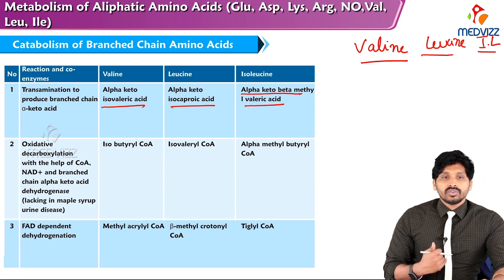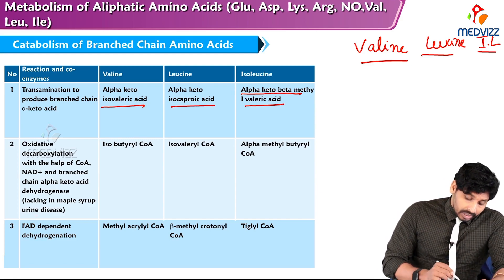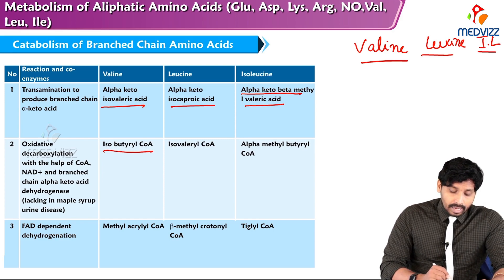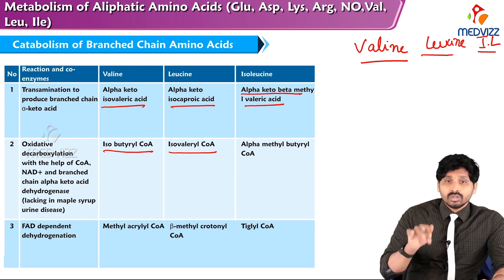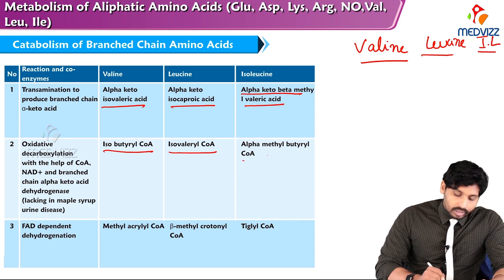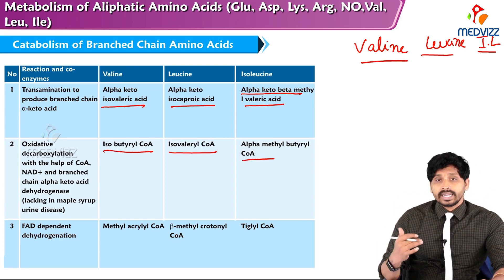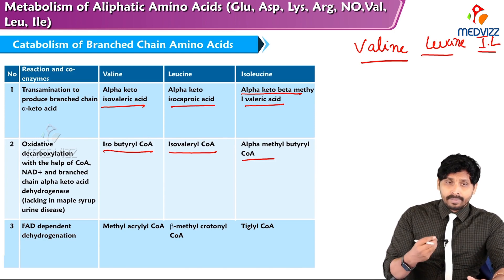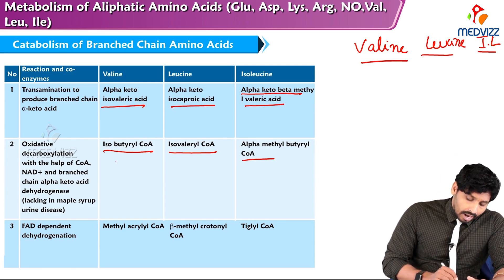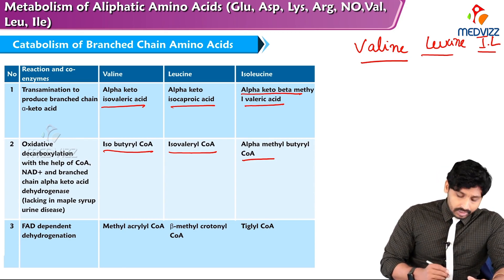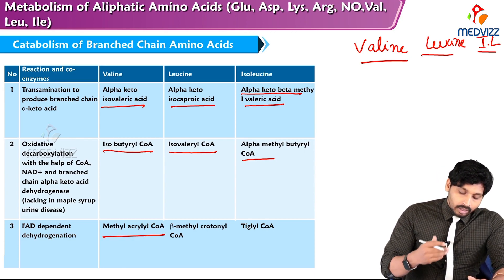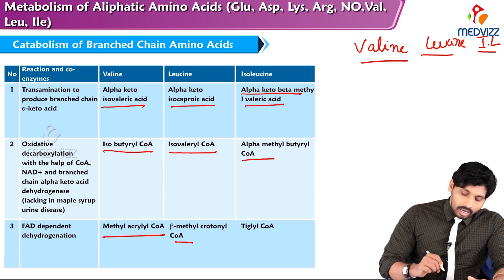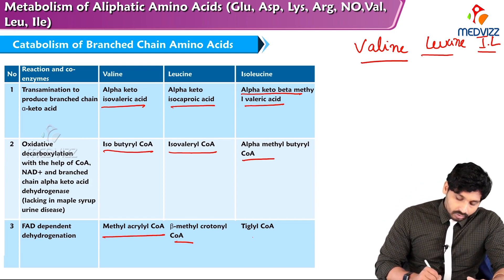When undergoing oxidative decarboxylation with the help of coenzyme A: alpha-keto isovaleric acid is converted to isobutyryl CoA, alpha-keto isocaproic acid of leucine is converted to isovaleryl CoA, and alpha-keto beta-methyl valeric acid of isoleucine is converted to alpha-methyl butyryl CoA. The next step is FAD-dependent dehydrogenation: isobutyryl CoA from valine is converted to methacryloyl CoA, isovaleryl CoA from leucine to beta-methylcrotonyl CoA, and alpha-methyl butyryl CoA from isoleucine to tiglyl CoA.